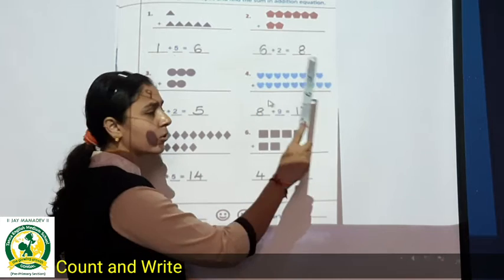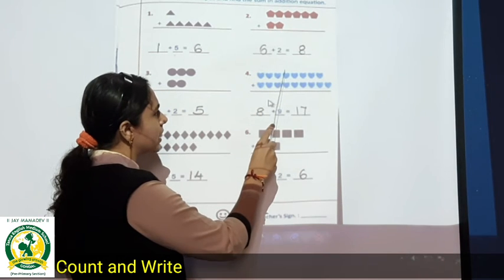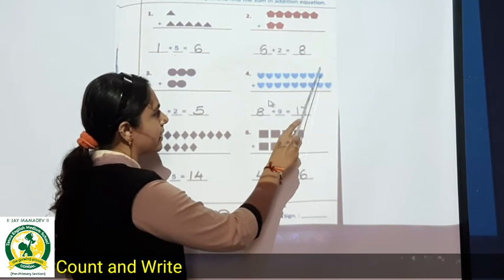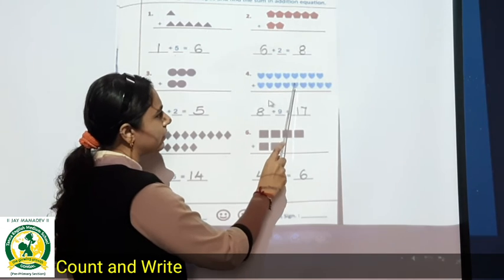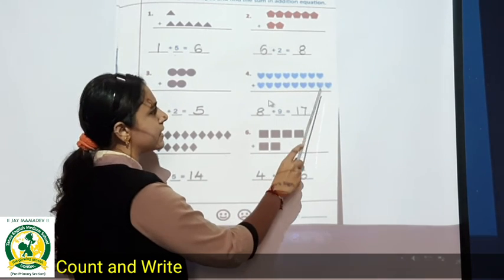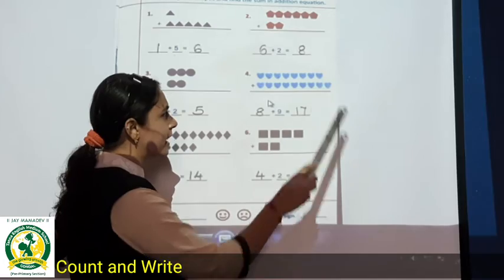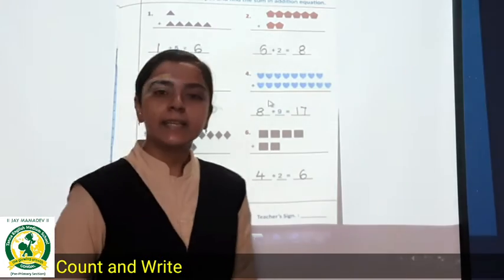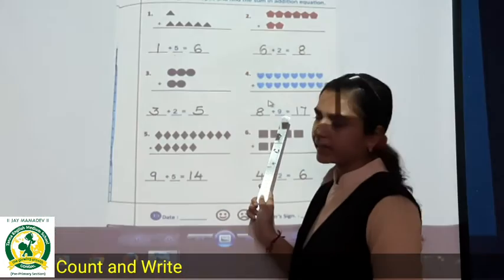So let's count all the hearts. One, two, three, four, five, six, seven, eight, nine, ten, eleven, twelve, thirteen, fourteen, fifteen, sixteen and seventeen. How many hearts are total? Seventeen. So the last answer is seventeen.